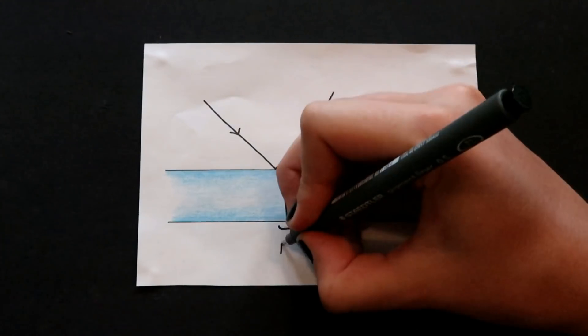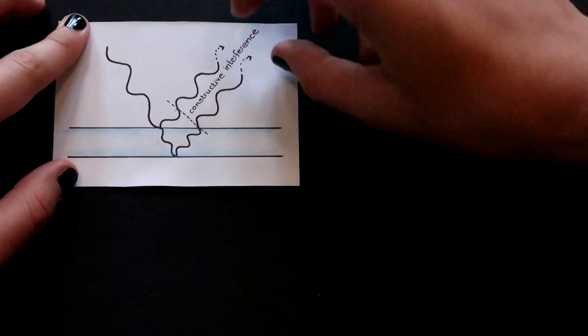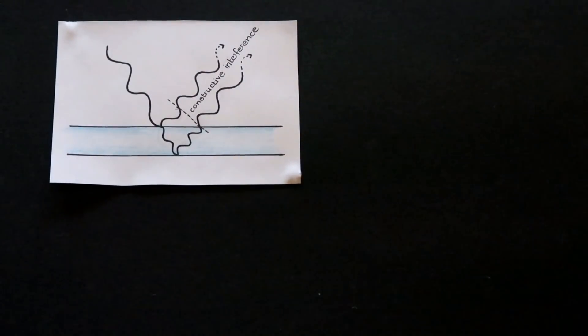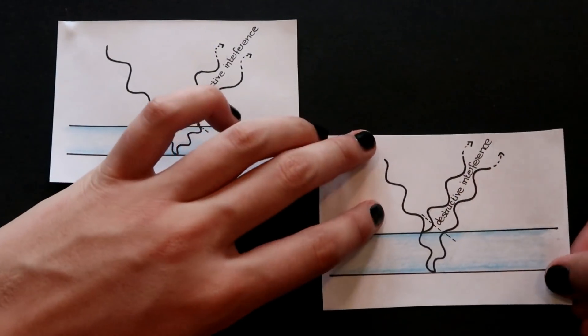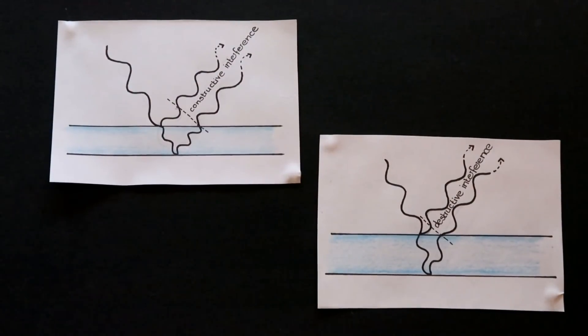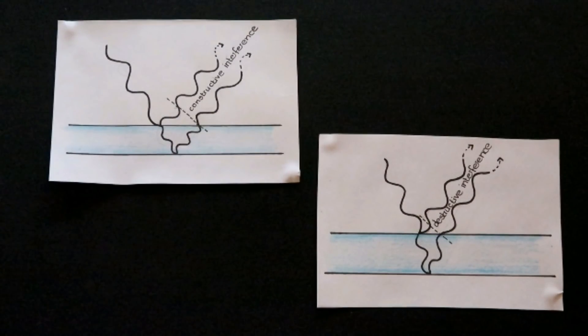Does this remind you of anything? Our conditions for constructive and destructive interference! If the film is just the right thickness so that the wave reflected off the bottom has travelled a whole number of wavelengths further than the bit reflected off the top, we'll end up with constructive interference, and when we look at the film it'll appear very bright. But if the film thickness means the wave reflected off the bottom has travelled a whole number plus a half wavelengths further, we'll get destructive interference, and the film will look black because the light waves are cancelling each other out.